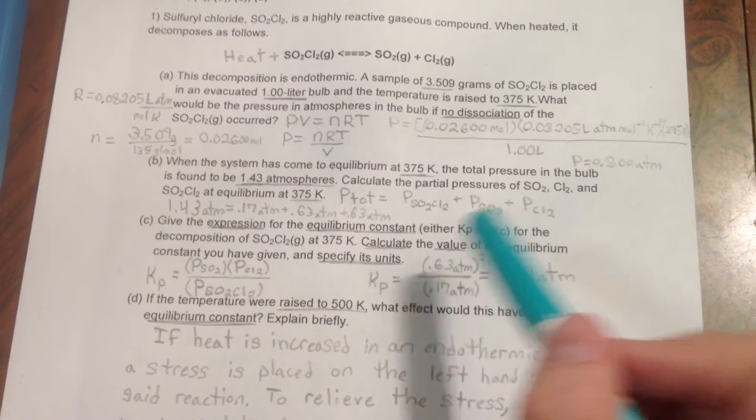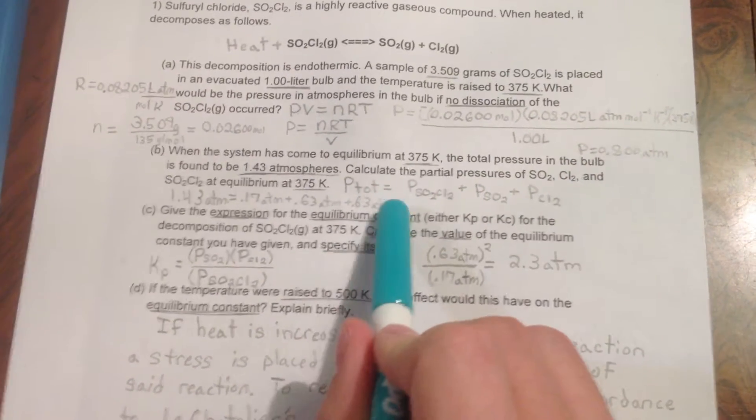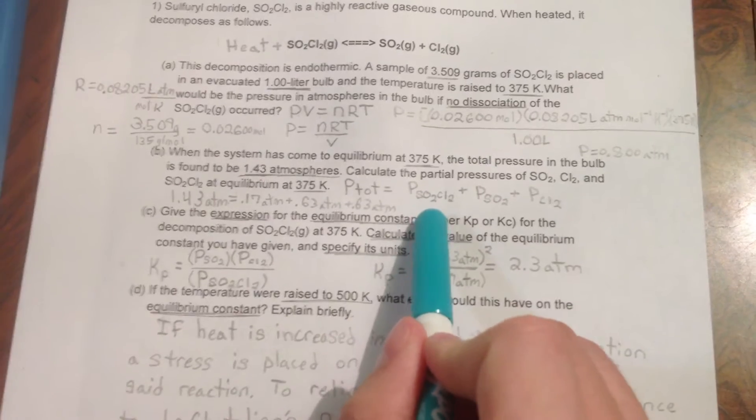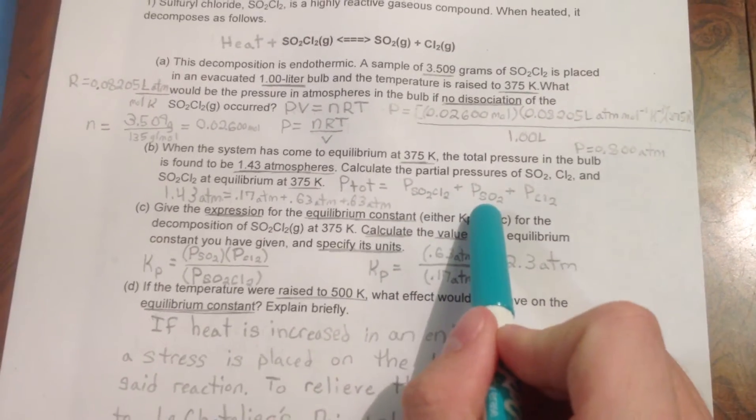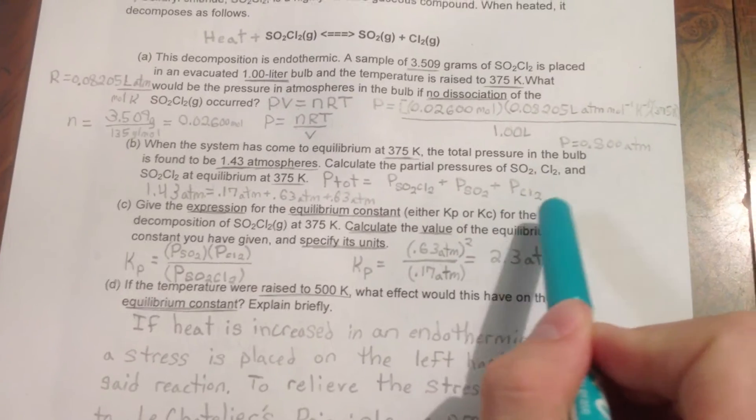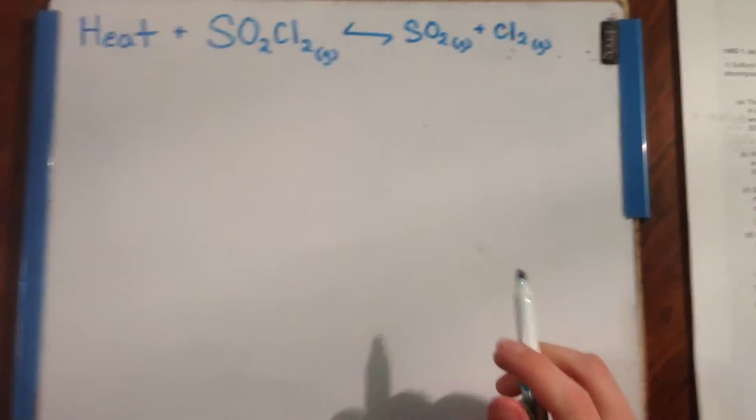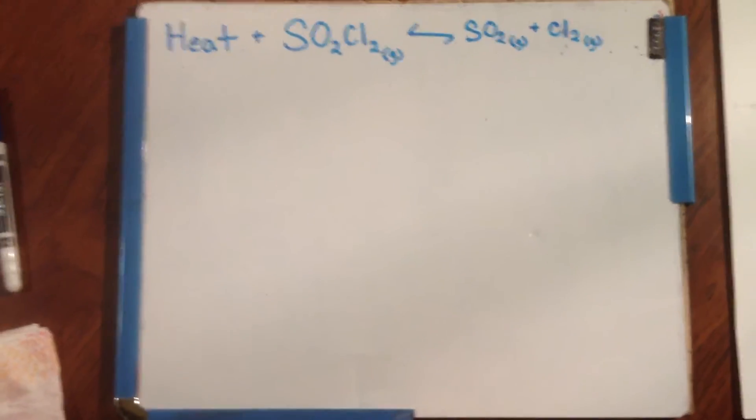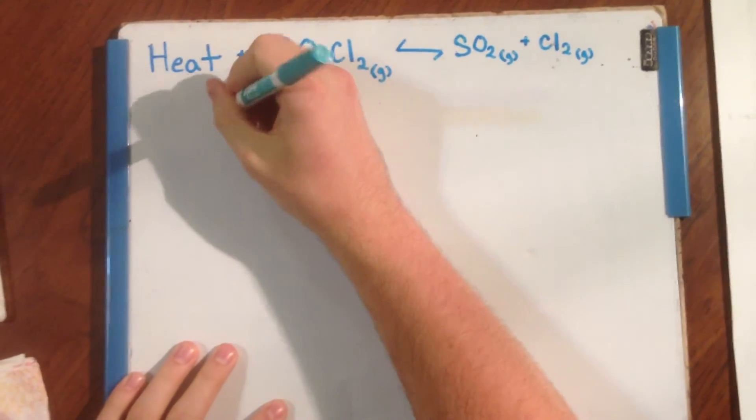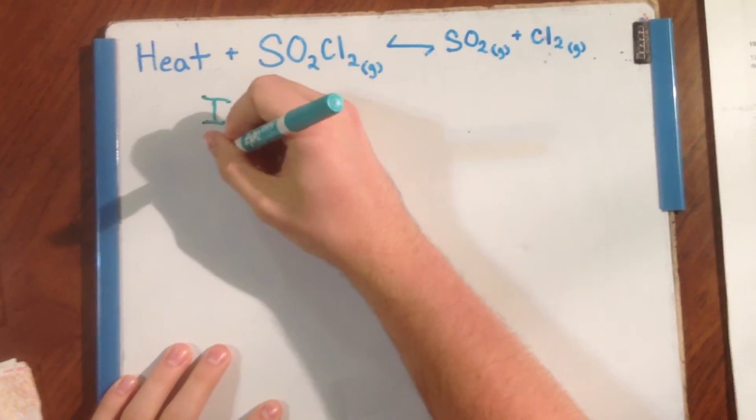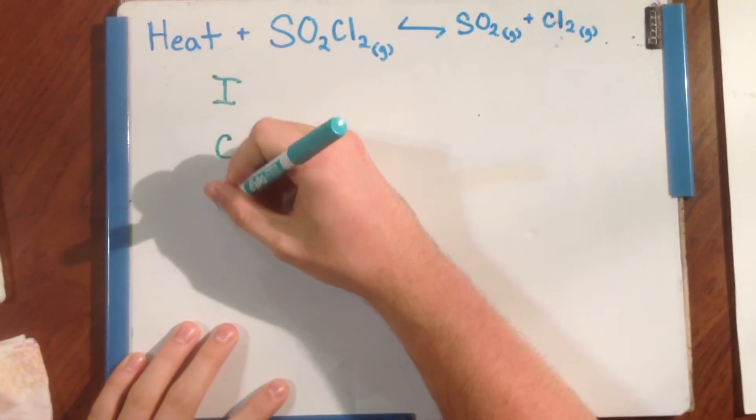Here, we need the equation P total equals PSO2Cl2 plus PSO2 plus PCl2. We will need to use an ICE chart to obtain our values for the equation. ICE stands for Initial, Change, and Equilibrium.